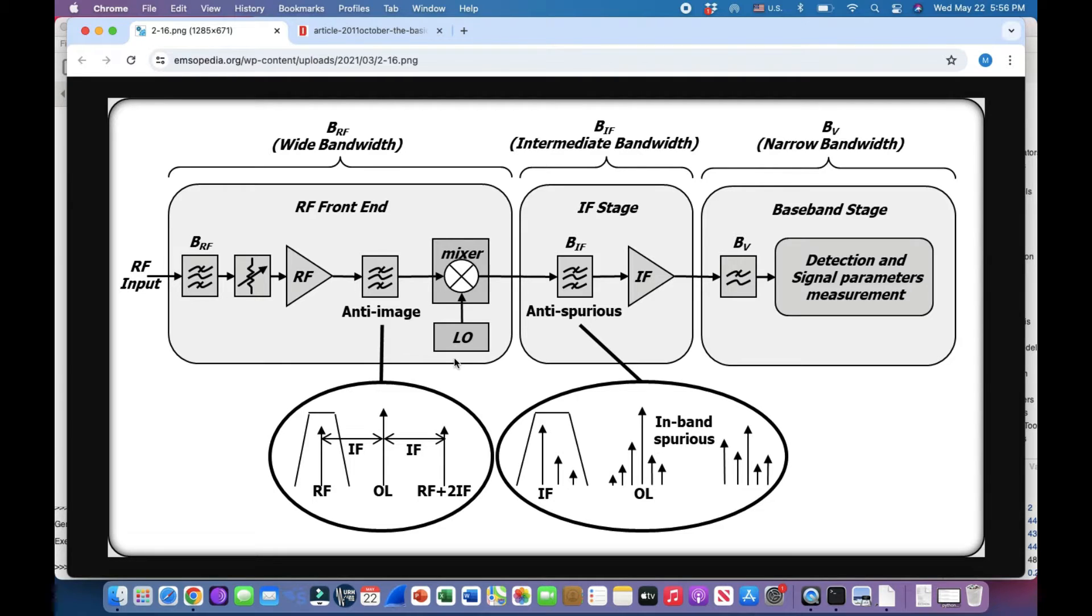Welcome back to my channel. This video is going to be about receivers, and one of the most popular receivers that was developed back in the early 1900s—the superheterodyne receiver. This is basically a block diagram of a receiver where you have an RF front end, then an IF stage, then a baseband stage.